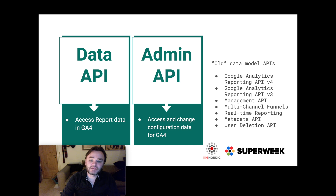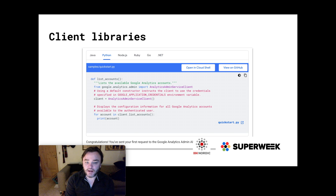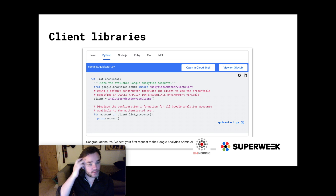There are all these other APIs built up over the years - some people are still using v3, the Management API, Multi-Channel Funnels - but those only work with old properties. If you want GA4, you have to use the Admin API or the Data API. To use those APIs, you've got lots of options. Probably the easiest way if you're new is to download one of the client libraries. The supported ones are Java, Python, Node, Ruby, Go, and .NET - and R is not on that list, which is why I've taken it upon myself to do that.